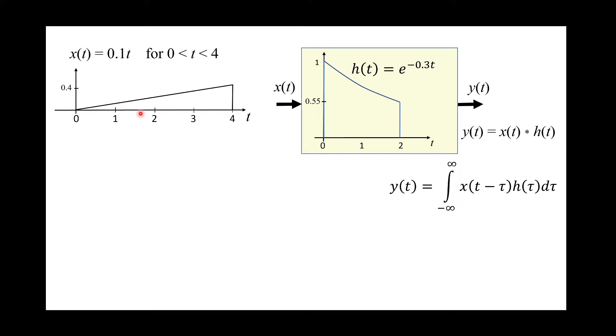We consider zero time as a reference for 12 noon, and 1 for 1 o'clock in the afternoon, and 2 for 2 o'clock in the afternoon, and so forth.